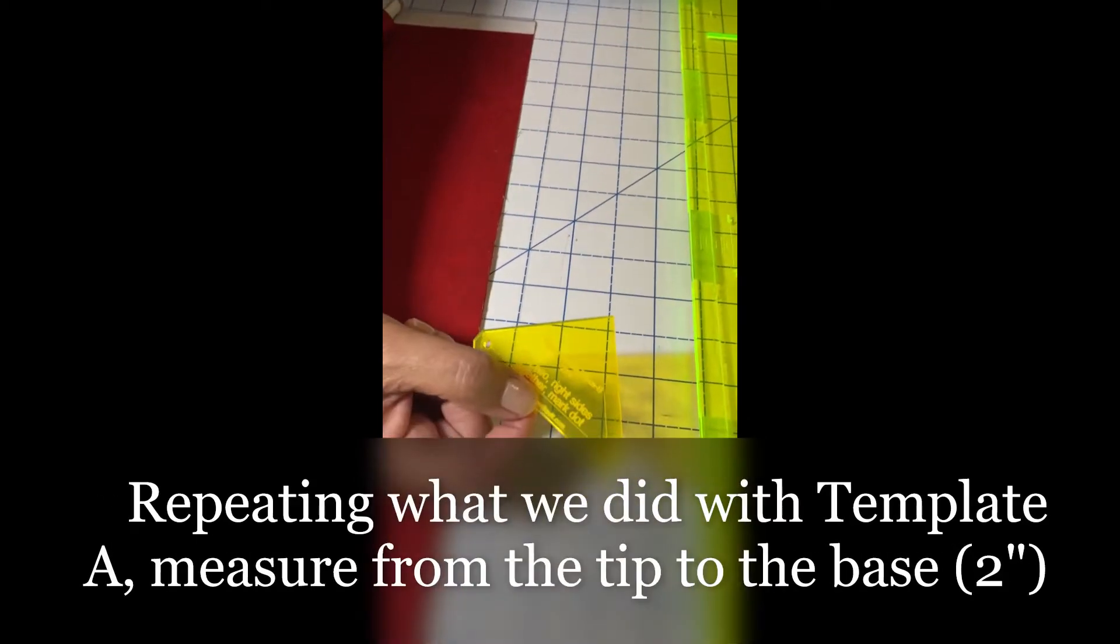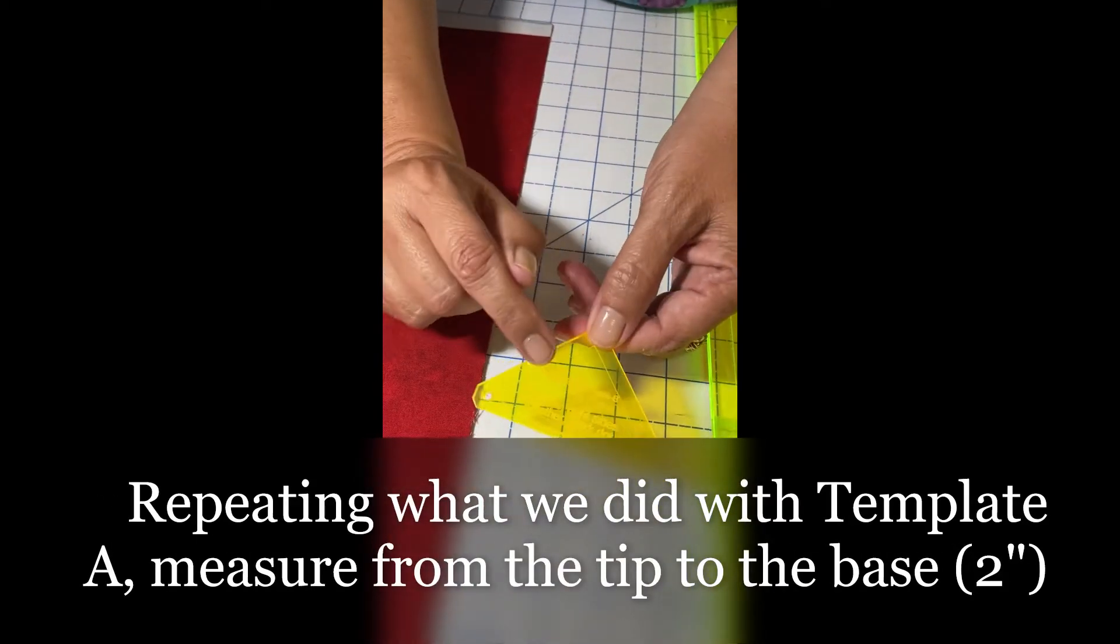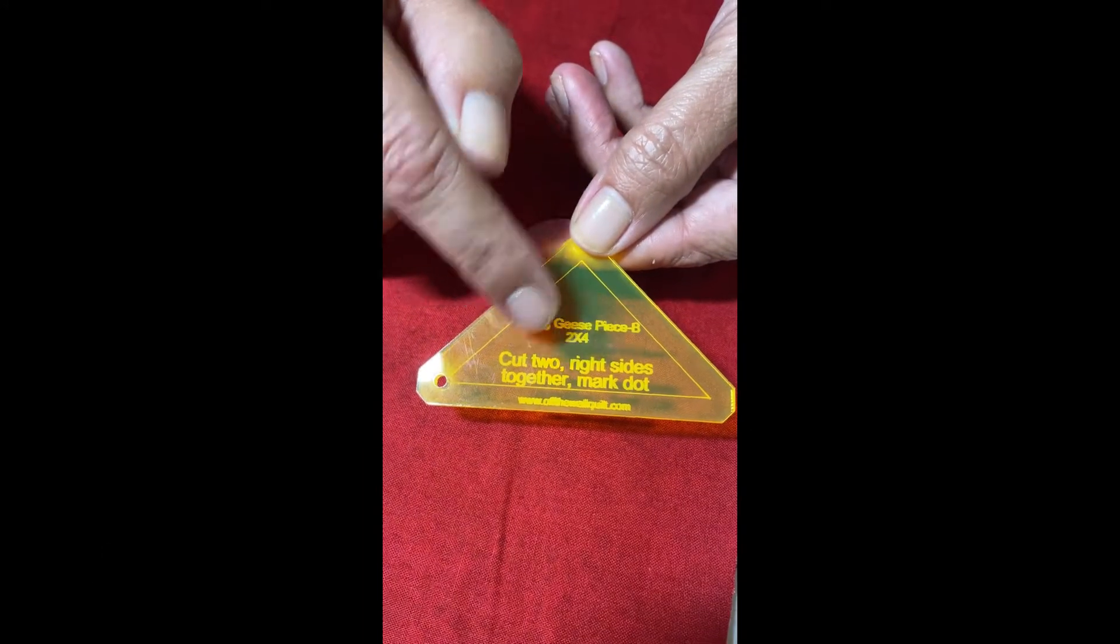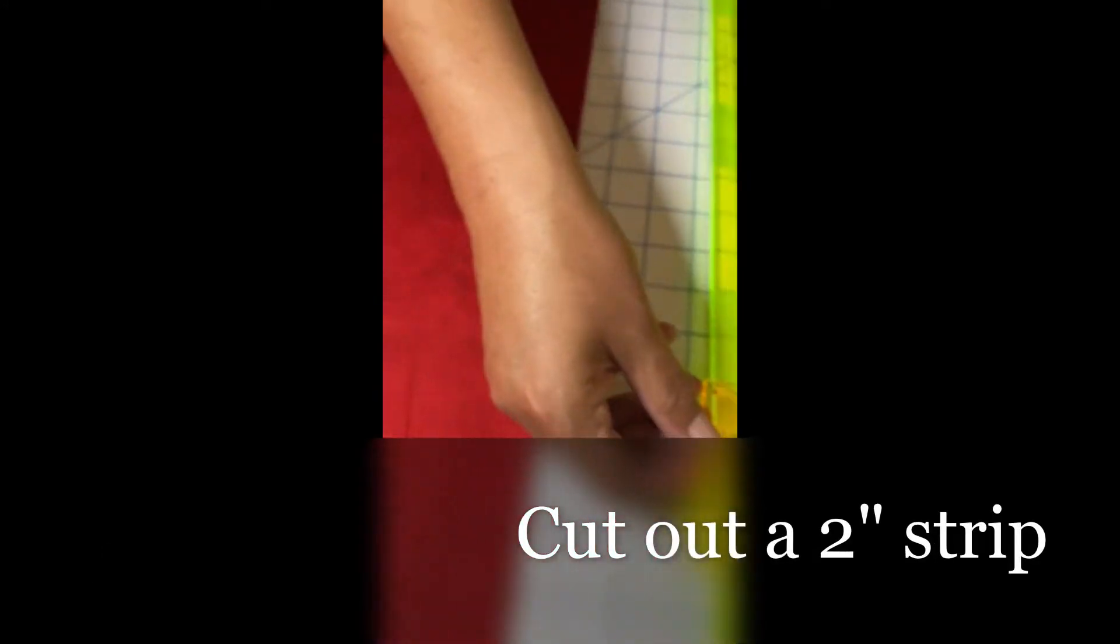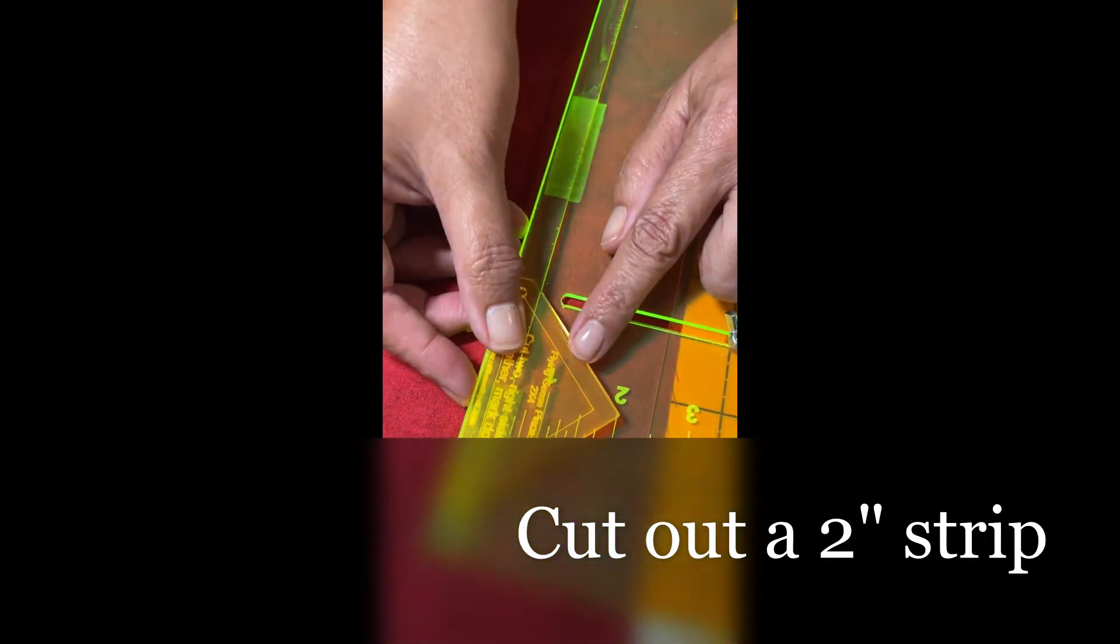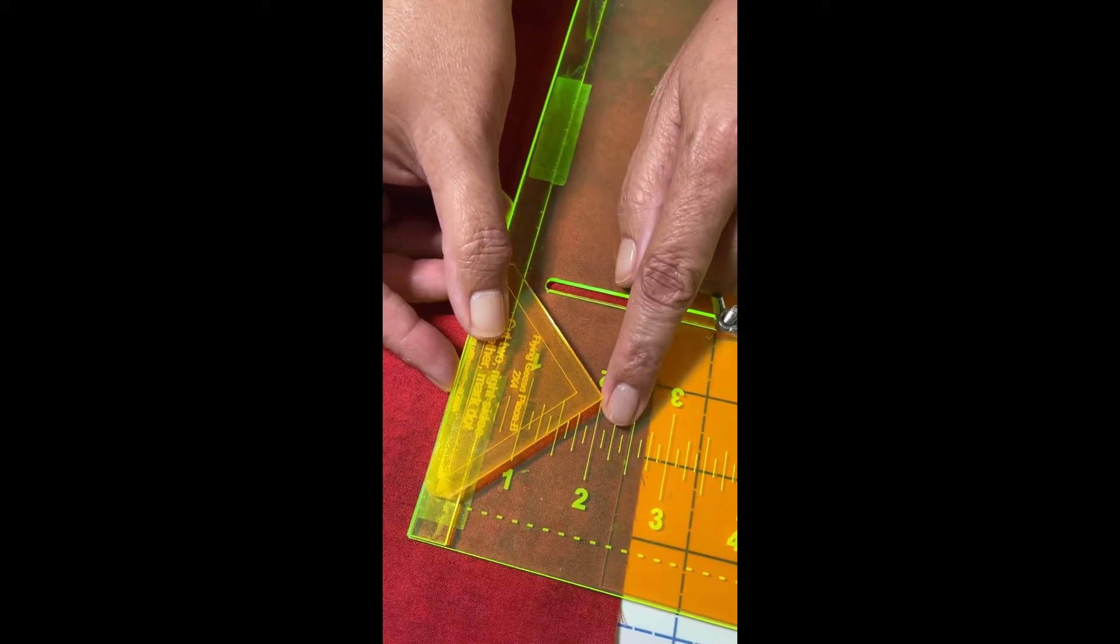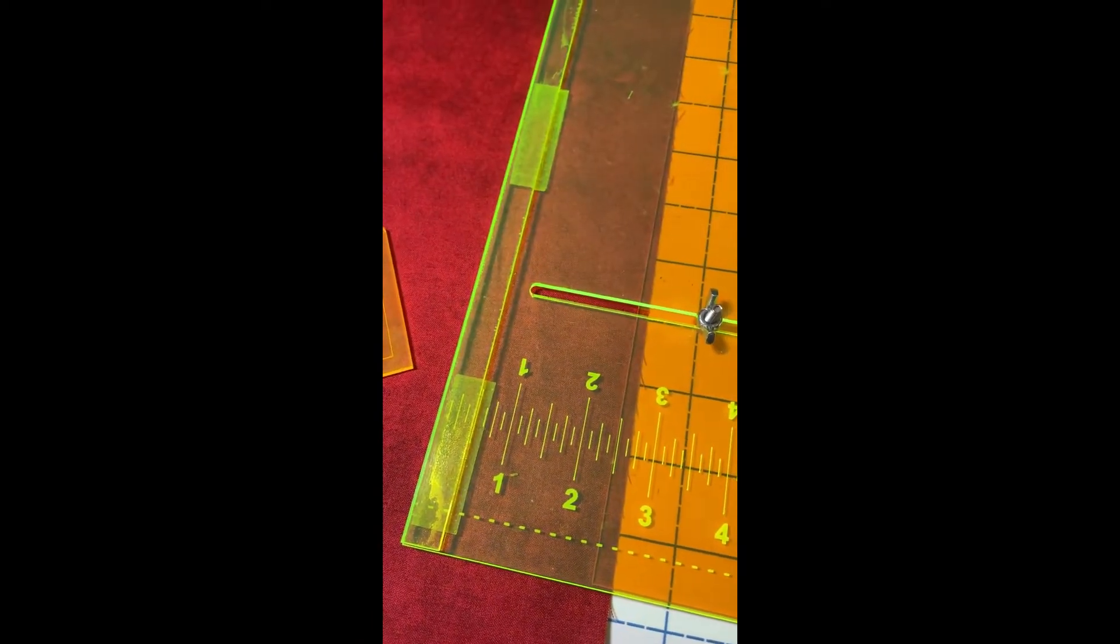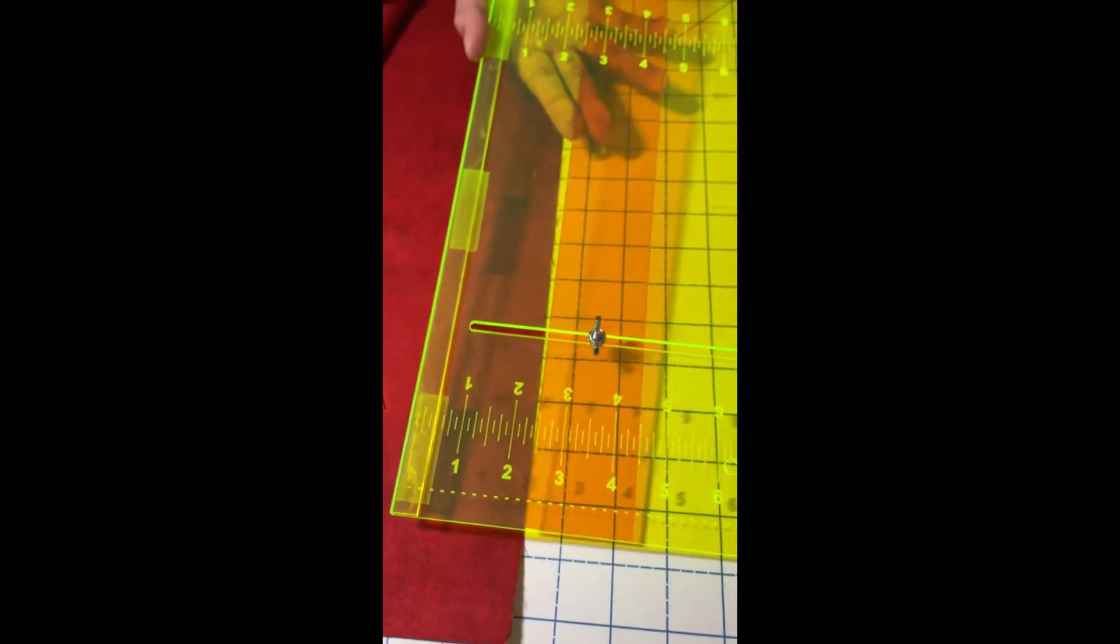Now I'll cut my wings of the flying geese. This is cut two right sides together and then I'm going to measure and it comes in right at 2 inches, so I'm going to adjust my strip ruler to 2 inches.